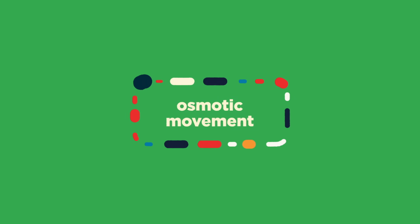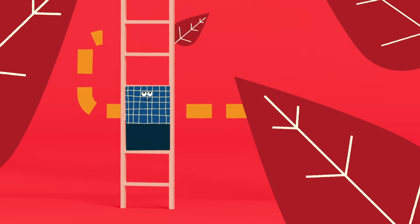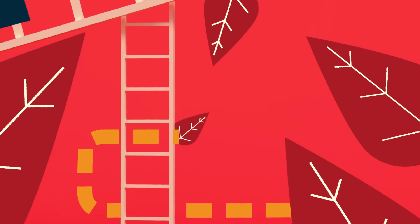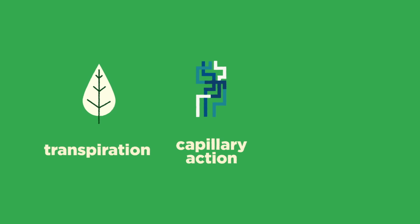This process, called osmotic movement, creates nutrient-rich xylem sap, which will then travel up the trunk to spread those nutrients through the tree. But this journey faces a formidable obstacle—gravity. To accomplish this Herculean task, the xylem relies on three forces—transpiration, capillary action, and root pressure.